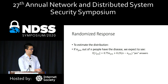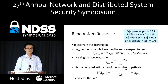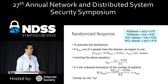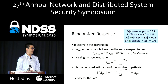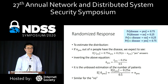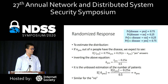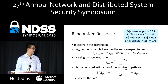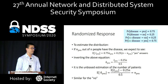By reversing this equation, we arrive at a very simple formula that gives us the estimation of the disease prevalence. This is an unbiased estimation. We can do the similar thing for the no answers as well.